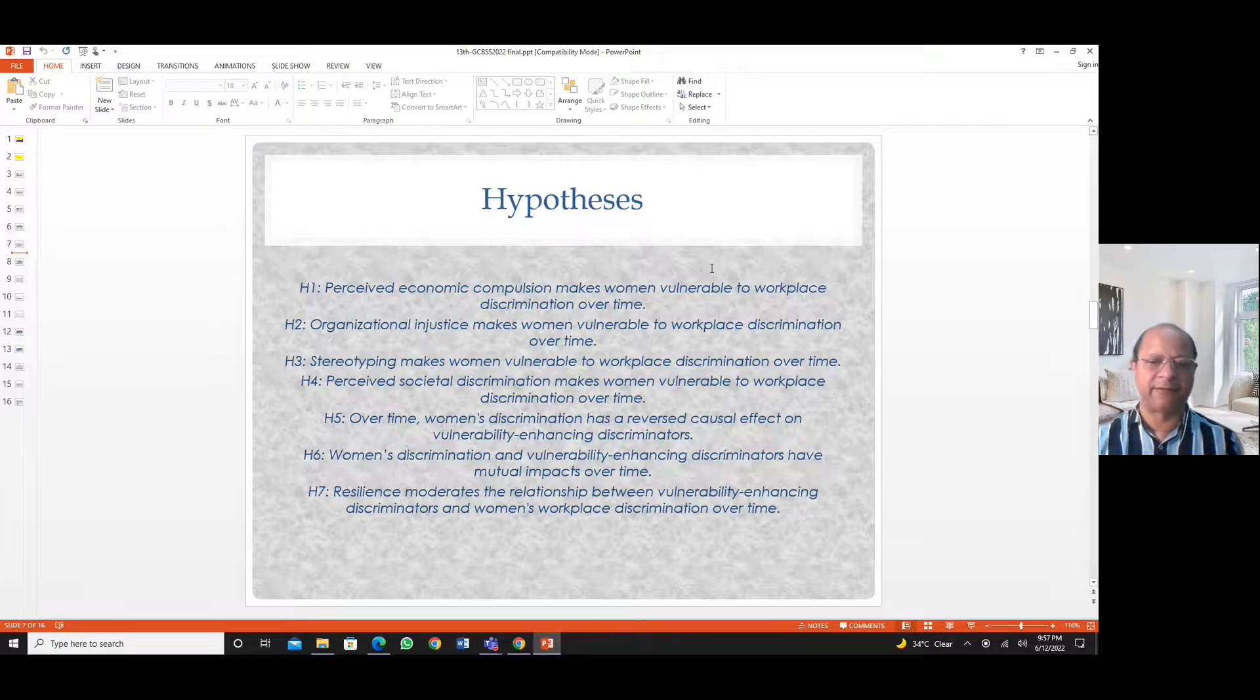It's not only the drivers are causing discrimination, but the discrimination itself may have a reverse causal effect on the drivers. Women's discrimination and vulnerability-enhancing discriminators have mutual impacts over time, which is a reciprocal relationship. And finally, at seven, resilience moderates the relationship between the vulnerability-enhancing discriminators and women's workplace discrimination over time. So we look at the moderating role of resilience in mitigating the causal, reverse, or reciprocal relationships.